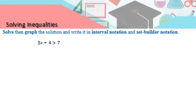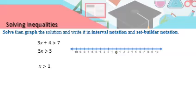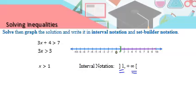Now let's solve, then graph, then write the interval. For 3x plus 4 greater than 7: subtract 4 to get 3x greater than 3, so x greater than 1. On the number line, all values to the right of 1; since 1 is not included, we use an open bracket around 1 and open around plus infinity. The interval notation is 1 to plus infinity, open on both ends.